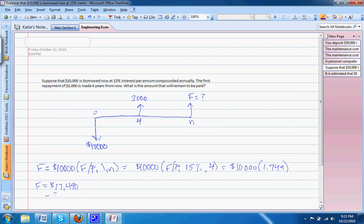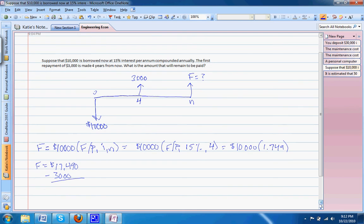And here, we actually just subtract our $3,000 to get a value of $14,490. That's our solution for this problem, because we were trying to convert it to the same time as the amount left to be repaid after four years. We converted our $10,000 to future and were able to solve that problem.